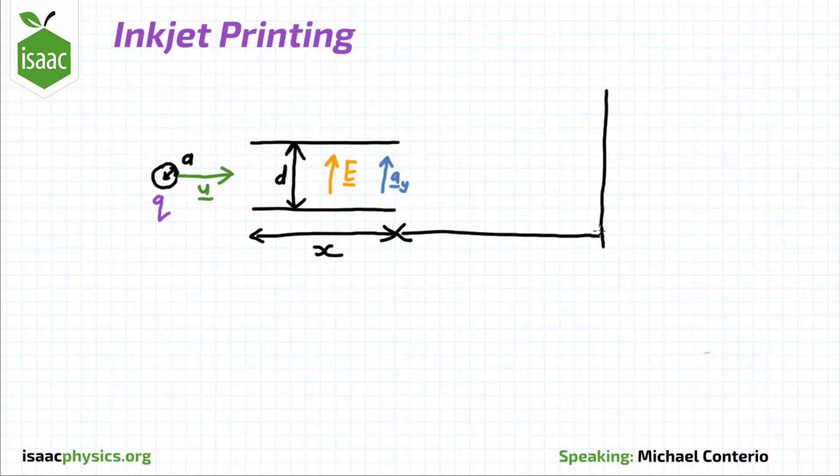After hitting the screen a distance l away from the electrodes, the two drops of different charge have a distance of h between them, having travelled on two different paths to reach there.